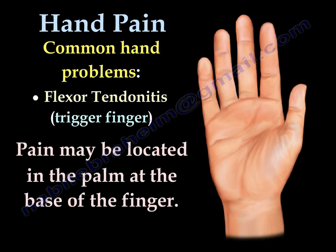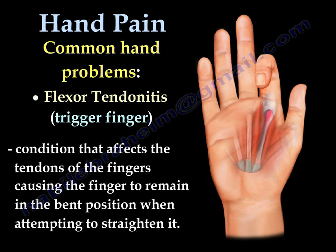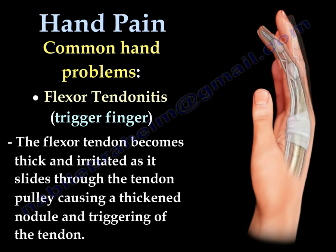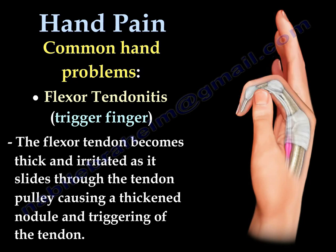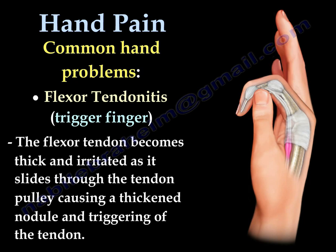Trigger finger involves pain located in the palm at the base of the finger. This condition affects the tendon of the fingers including the thumb, causing the finger to remain bent when attempting to straighten it. You can hear a click as you move the finger from flexion to extension. The flexor tendon becomes thick and irritated as it slides through the tendon pulley, causing a thickened nodule and triggering of the tendon as the fingers move.